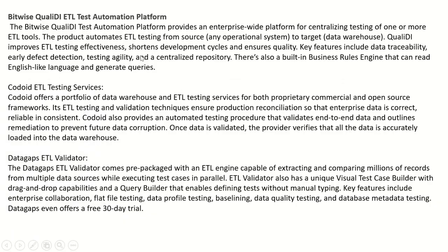The first tool is Bitwise Quality Deal ETL Test Automation Platform. It provides an enterprise-wide platform for centralizing testing of one or more ETL tools. The product automates ETL testing from source — any type of operational system — to target, that is, the data warehouse. Quality Deal improves ETL testing effectiveness, shortens development cycles, and ensures quality. Key features include data traceability, early defect detection, testing agility, and a centralized repository. There is also a built-in business rules engine that can read English-like language and generate queries.